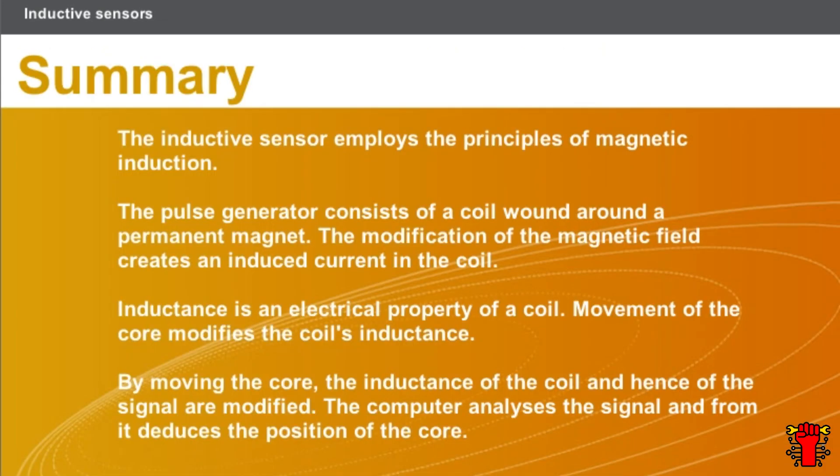In this chapter, we covered the following points: the inductive sensor employs the principles of magnetic induction. The pulse generator consists of a coil wound around a permanent magnet, and the modification of the magnetic field creates an induced current in the coil. Inductance is an electrical property of a coil. Movement of the core modifies the coil's inductance, and by moving the core, the inductance of the coil and hence the signal are modified. The computer analyzes the signal and deduces the position of the core.